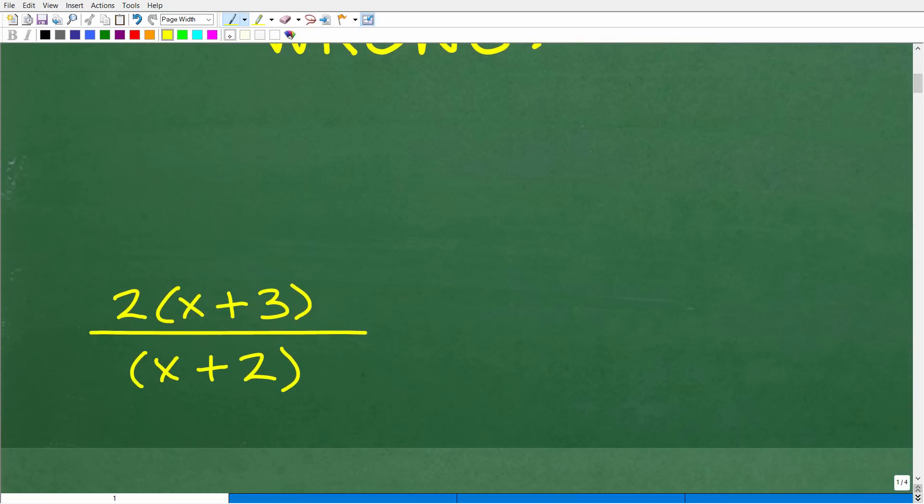But anyways, let's take a look at the answer. The correct answer here is 2 times x plus 3 over x plus 2. Now, if your numerator is 2x plus 6 over x plus 2, that is fine as well.